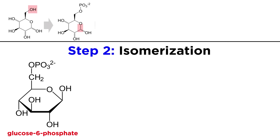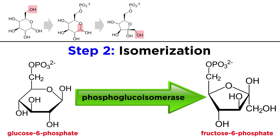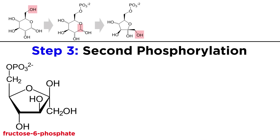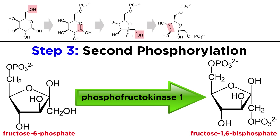Next, glucose-6-phosphate isomerizes to become fructose-6-phosphate, a process which is catalyzed by phosphoglucose isomerase. After that is another phosphorylation, this time on the carbon-1 hydroxyl, which gives us fructose-1,6-bisphosphate. This step is catalyzed by phosphofructokinase-1, and it will cost another ATP.